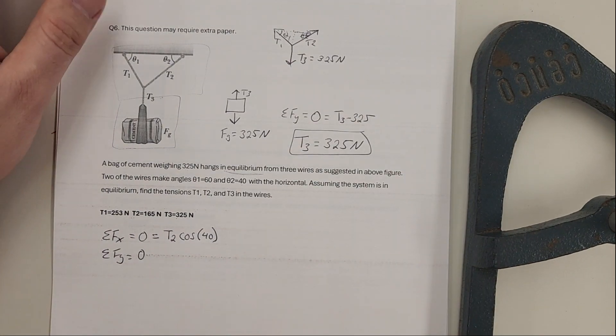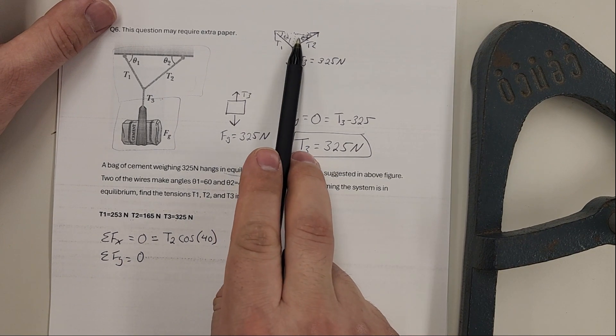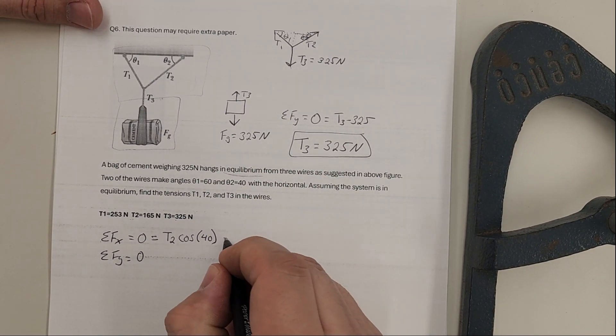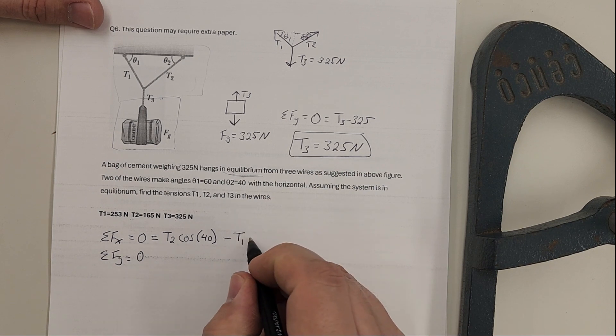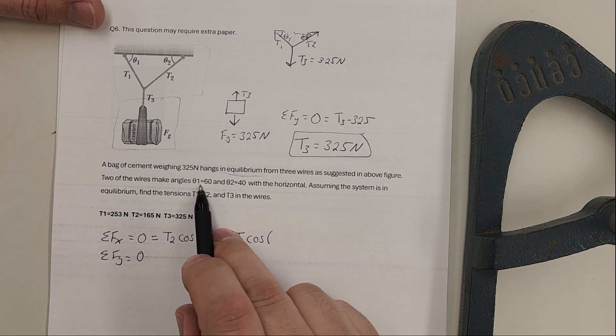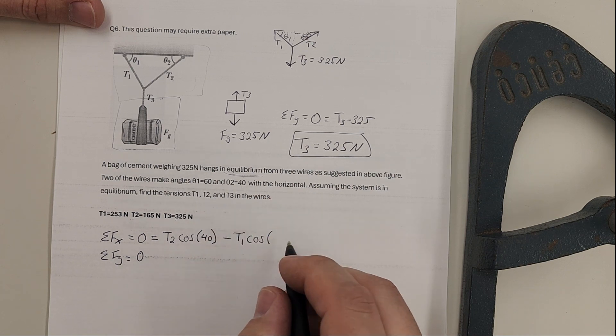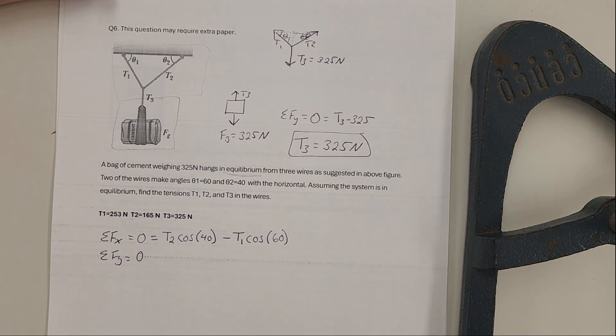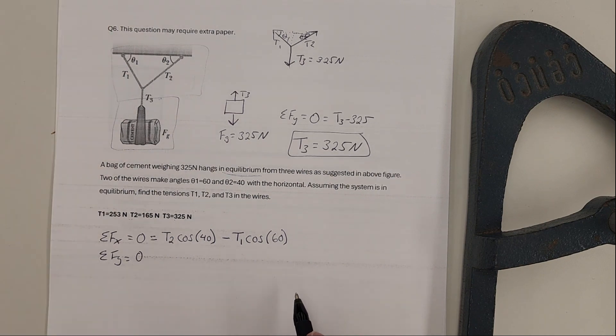We'll have a component of T1, but it is traveling in the negative x direction, so minus T1. That's also adjacent, so it'll be a cosine of the angle. T1 has an angle of 60 degrees, so T1 cos 60. And that takes care of the x's.